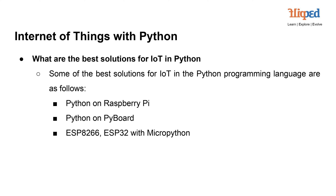ESP8266 and ESP32 with MicroPython: The ESP8266 and ESP32 are popular Wi-Fi-enabled microcontrollers that can run MicroPython. These microcontrollers are cost-effective and have built-in Wi-Fi connectivity, making them suitable for various IoT applications. Python's ease-of-use and MicroPython's lightweight implementation offer a smooth development experience for IoT solutions on these devices, catering to both full-fledged single-board computers and resource-constrained microcontrollers.